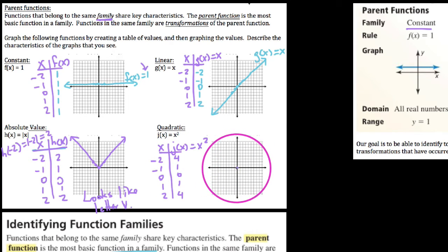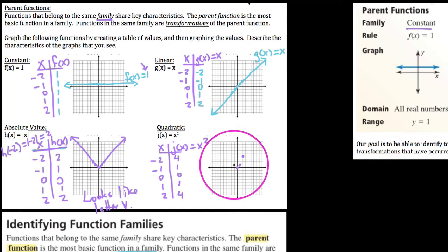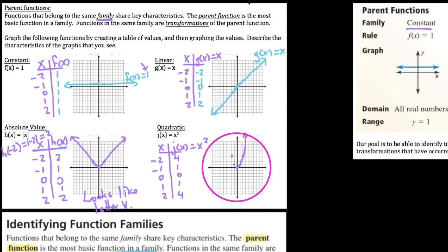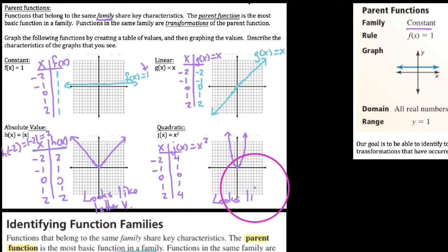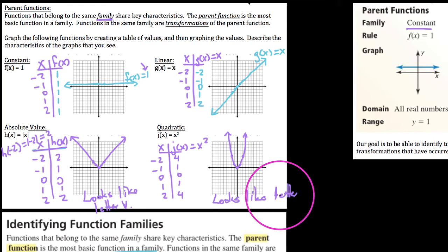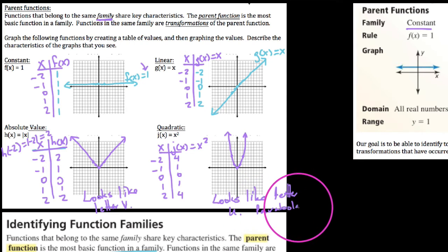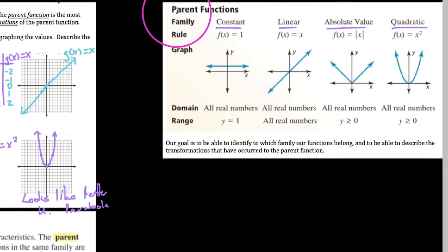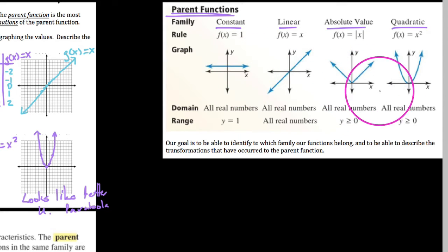When we graph these points — zero-zero, one-one, two-four, and if we plug in three we get nine — what we get is not something V-shaped but a curve. We refer to this curve as a parabola, and it looks like the letter U. So we have all of these families of functions listed here, referred to as the parent functions, because every function in these families is just a transformation of these original parent functions.